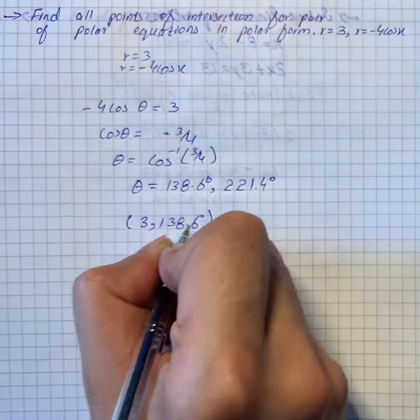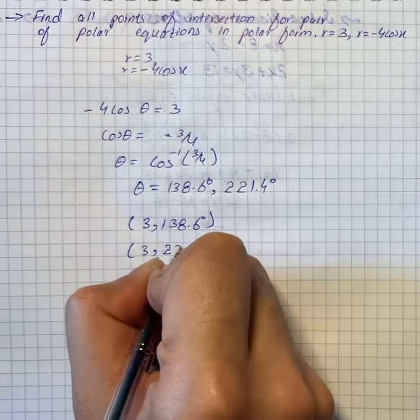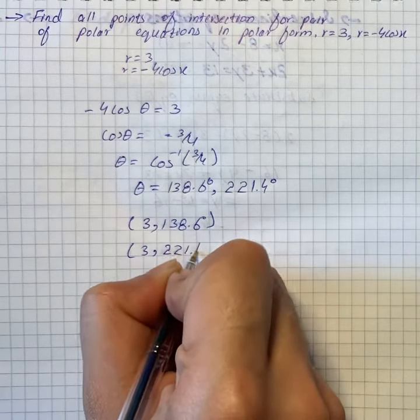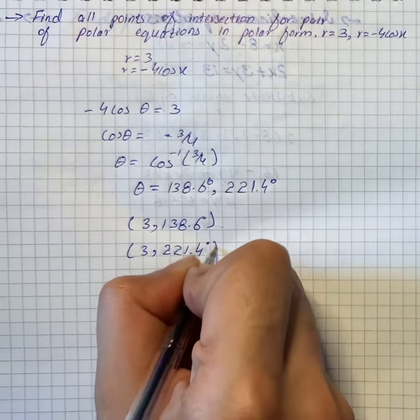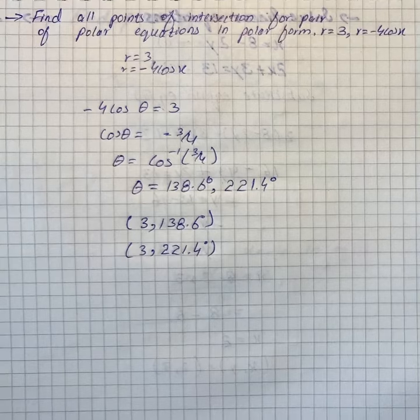So the points of intersection of the polar pair are (3, 138.6°) and (3, 221.4°). That is our solution for the given polar equations.